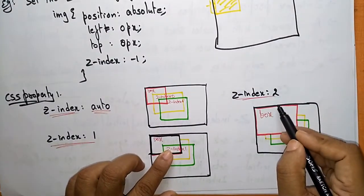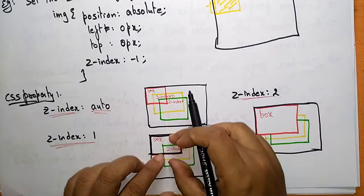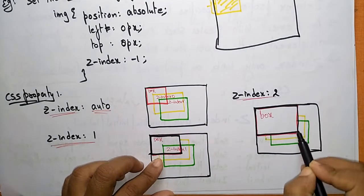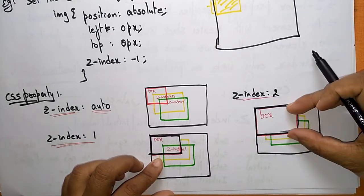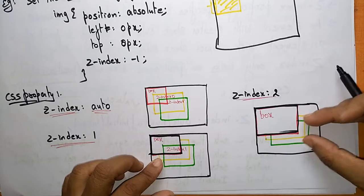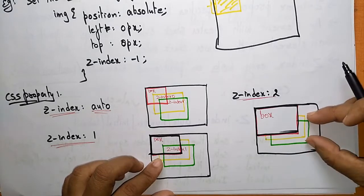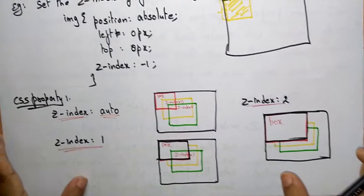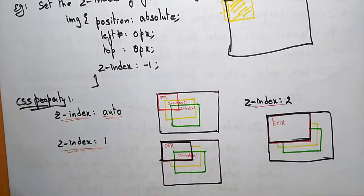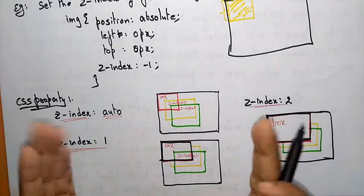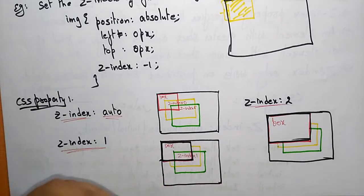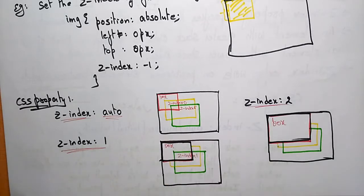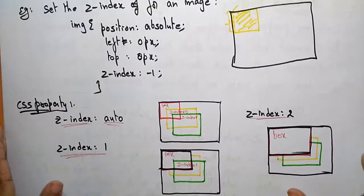Now if Z-index is equal to two, that means the box has to be placed above the others. The box is now placed at the top. Below this box there is Z-index one and below that Z-index zero. This property places values, images, or different elements arranged according to your requirements — at the top of the stack or below. It follows the property of the stack.